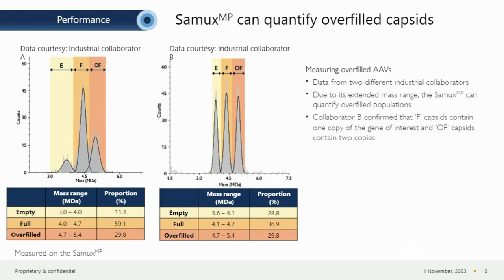Next, I'd like to address overfilled capsids, which can sometimes appear in AAV samples. Two industrial collaborators — collaborator A and collaborator B — had samples confirmed to contain overfilled capsids. In the histogram, 'E' stands for empty, 'F' for full, and 'OF' for overfilled capsids. Industrial collaborator B confirmed that the full capsids contained one copy of the gene of interest, while the overfilled capsids contained two copies of the genome.